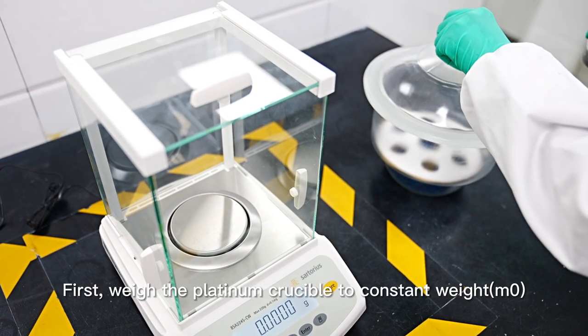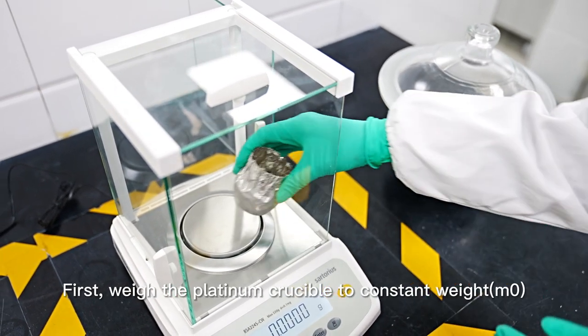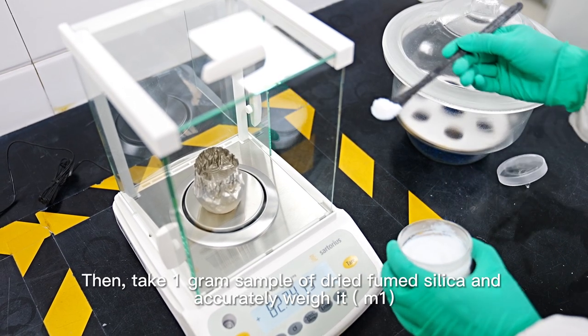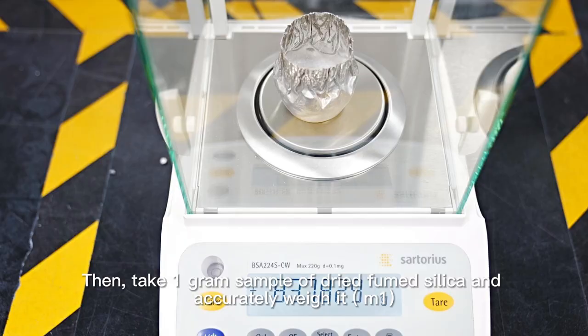First, weigh the platinum crucible to constant weight M0. Then, take a 1g sample of dried fumed silica and accurately weigh it.